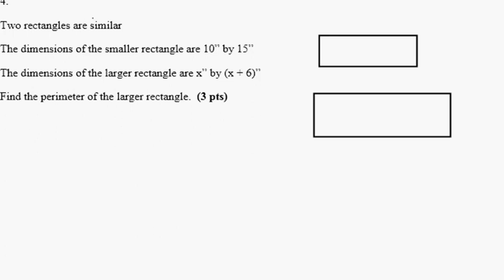So these two rectangles are similar, which means that the ratio between the short side to the short side has to be the same as the long side to the long side. Here the dimensions of the smaller rectangle are 10 by 15. The dimensions of the larger rectangle are x by x plus 6.